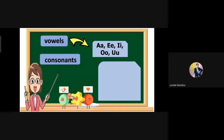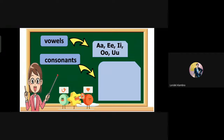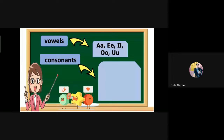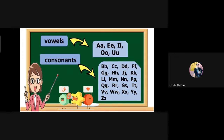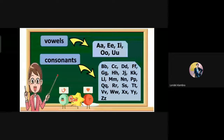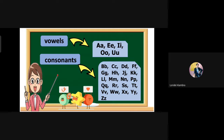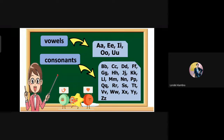And how many consonants do we have? Very good. We have 21 consonants. And that's B, C, D, F, G, H, J, K, L, M, N, P, Q, R, S, T, V, W, X, Y, and Z.